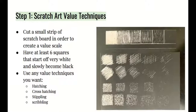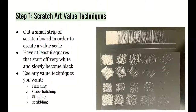We're going to go over a few scratch art value techniques. What you will do is cut a small strip off your scratch board to create a value scale. You should have at least six squares that start off very white and then slowly become black. Use any value techniques you want — hatching, cross-hatching, stippling, or even scribbling.